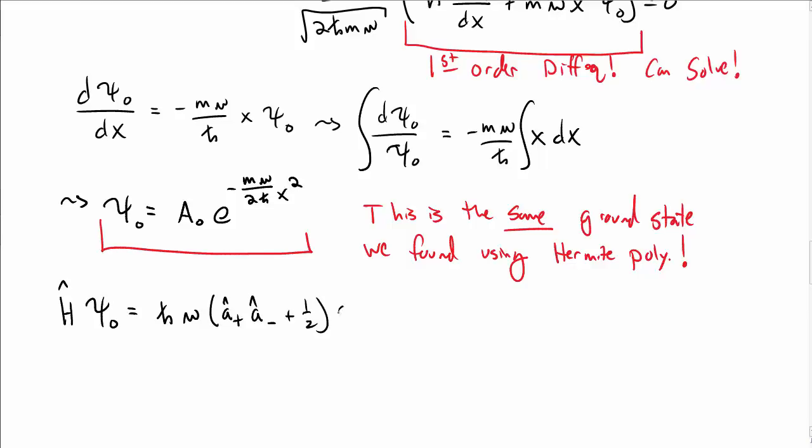The energy of this ground state is Ĥ times ψ₀, which when I apply Ĥ, I can write it in terms of raising and lowering operators. When I distribute that through, I get ℏω(A⁺A⁻)ψ₀ + ℏω/2 ψ₀.